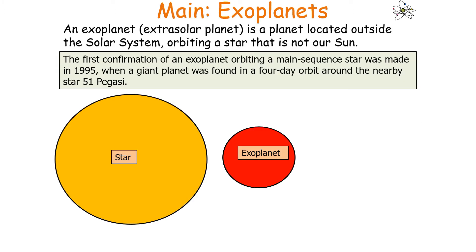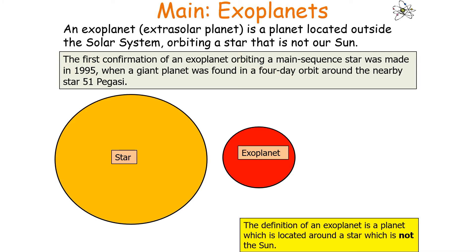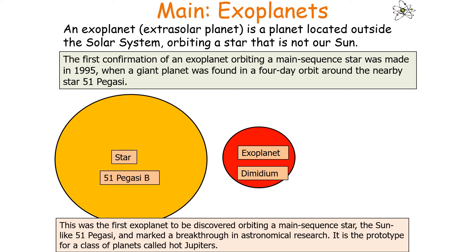An exoplanet, or an extrasolar planet, is a planet located outside the solar system orbiting a star that is not our sun. The first confirmation of an exoplanet orbiting a main-sequence star was made in 1995, when a giant planet was found in a four-day orbit around a nearby star, 51 Pegasi. It was a breakthrough and a prototype for a class of planets we now call Hot Jupiters.